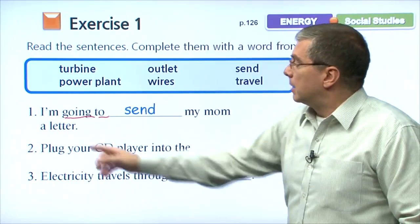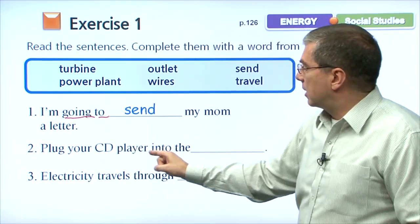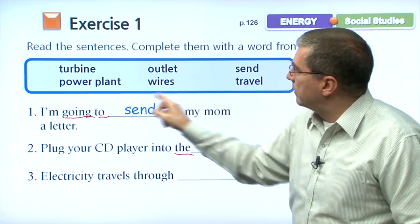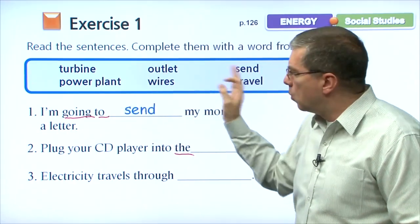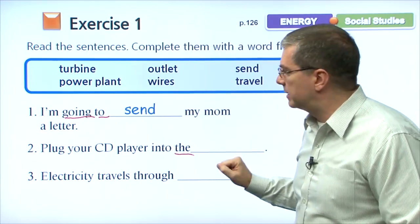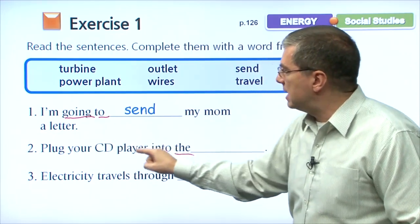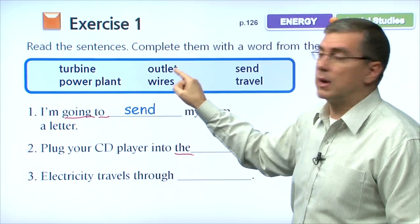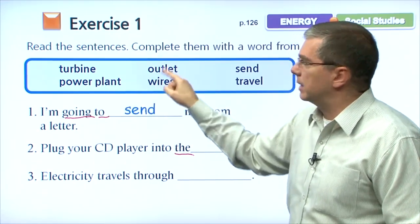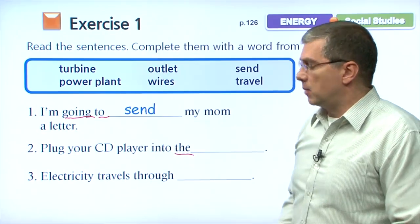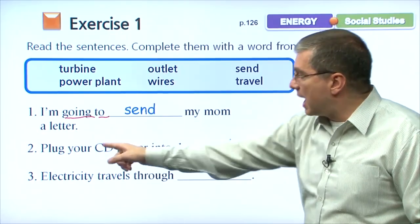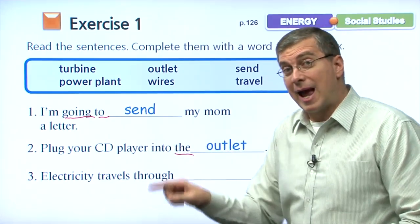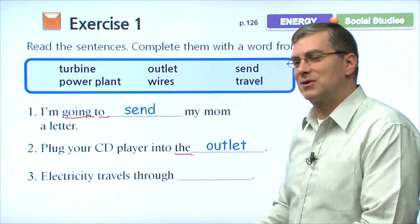Number two: plug your CD player into the blank. When we have the article 'the,' we need one of the nouns we talked about. Which noun goes at the end? Plug your CD player into the turbine? No. Outlet? Ah, that's our word right there. Not wires or power plant, but outlet — because you plug your device into an outlet and then you get electricity.